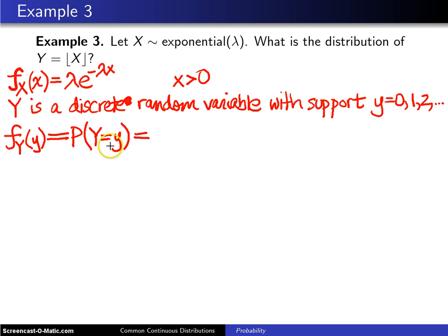So to get a y, on the other hand, means you want to get any value between y and y plus 1. And the probability of that will be the integral from y to y plus 1 of the probability density function of x, which is lambda e to the minus lambda x dx. And that's how you calculate that probability.